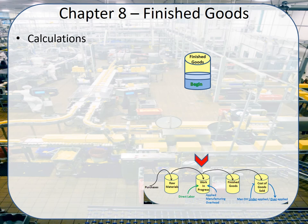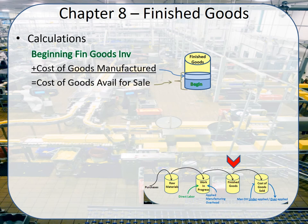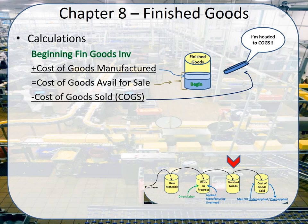Moving over to finished goods — a little simpler. We've got beginning finished goods, and during the period we add the cost of goods manufactured, so that piece that came over from WIP gives us the cost of goods we could have sold during the period. We're obviously not going to sell all of it, but we are going to sell some — that heads off to cost of goods sold — and we end with our finished goods inventory that remains for the next period.